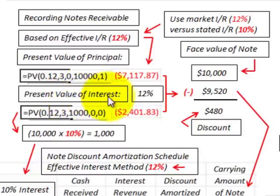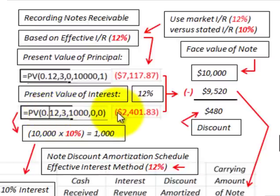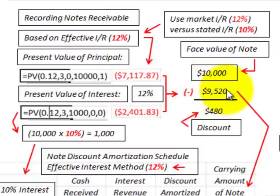For the present value of those interest payments, we have $1,000 interest payments — that's the $10,000 note times the 10% stated interest rate. The $1,000 payments are received at the end of each period, discounted back for 3 years at the 12% market rate of interest. The present value of these interest payments is $2,401. Adding that to the present value of the principal of $7,117 gives us a total present value of this note receivable of $9,520.